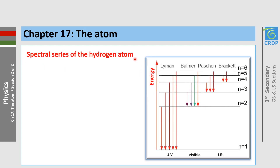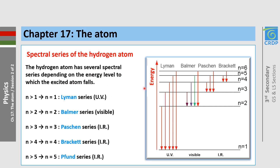The hydrogen atom has several spectral series depending on the level to which the excited atom falls. For example, from n greater than 1 to n equal 1, we have the Lyman series, which is in the UV part of the spectrum. From n greater than 2 to n equal 2, we have the Balmer series, which is in the visible part. From n greater than 3 to n equal 3, we have the Paschen series. The Paschen series and higher are in the infrared part, Balmer is in the visible, and the Lyman series is in the UV part of the spectrum.